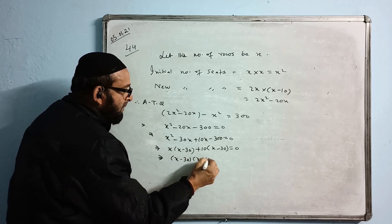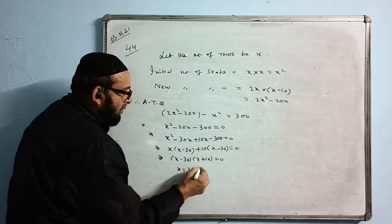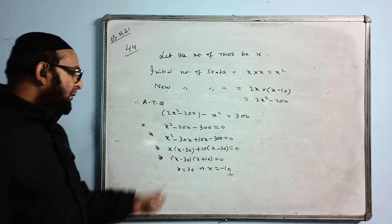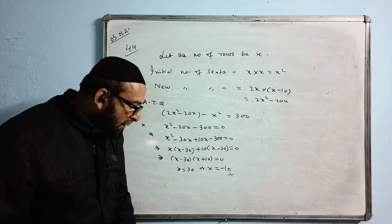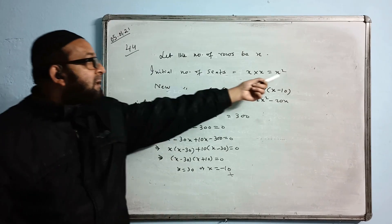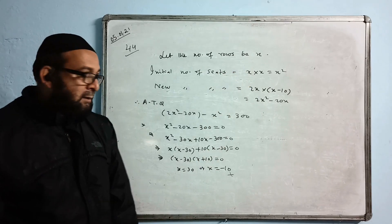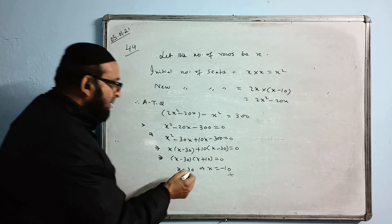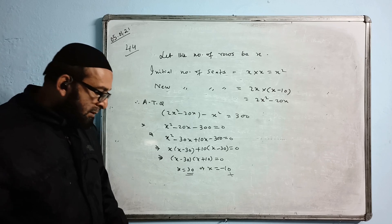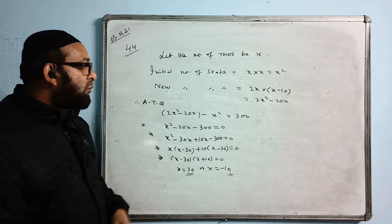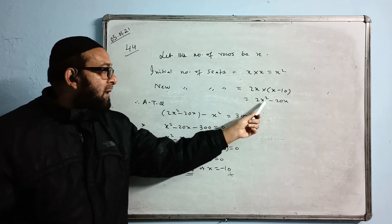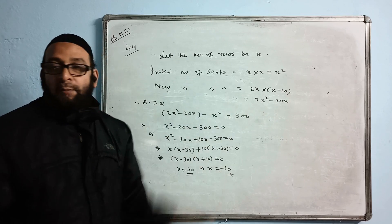X minus 30 times X plus 10 equals 0. Therefore X is 30 or X is minus 10. This is not possible, number of seats cannot be negative, so X is 30. Now we will answer according to the question. Question said: the number of rows in the original arrangement. Number of rows is X, so the answer is 30. That means there were 30 rows in the original arrangement. Number 2: the number of seats in the new arrangement is 2X squared minus 20X. Put the value of X equals 30 here and simplify. That is the answer.